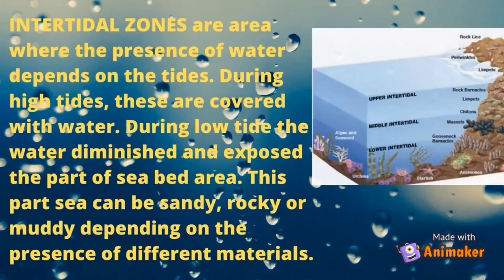Intertidal zones are areas where the presence of water depends on the tides. During high tides, these areas are covered with water. During low tides, the water diminishes and exposes part of the seabed area. These parts can be sandy, rocky, or muddy depending on the presence of different materials.